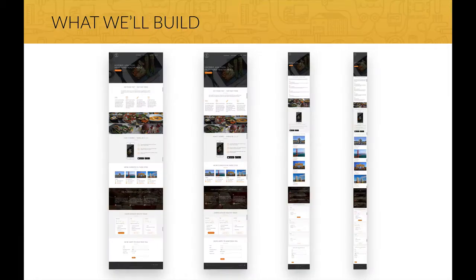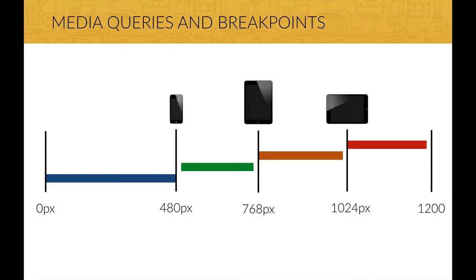This is how our website will look on four different screen sizes. As the screen gets smaller, our content also gets smaller and we have less white space so that the website can be seen on a mobile phone or tablet. Media queries are what will enable our website to call different CSS style declarations based on the current browser width or the width of a mobile device that displays our site. These media queries will trigger at different breakpoints, which are screen widths at which we want our website to change the way it looks in order to look good on all devices.